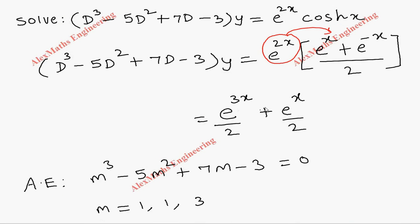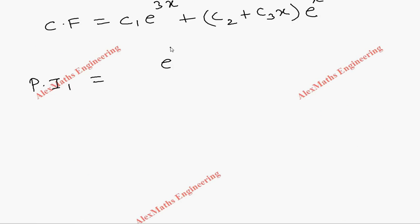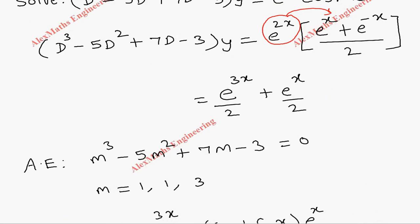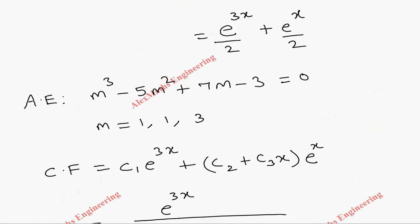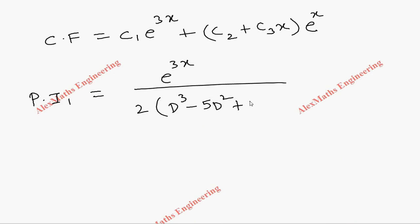For Particular Integral 1, we take e^(3x)/2 in the numerator and the operator expression D³ - 5D² + 7D - 3 in the denominator. By the procedure, we substitute d = 3 in the denominator.